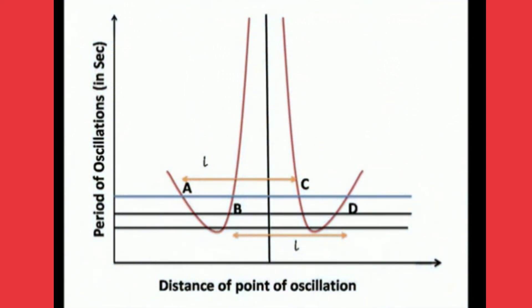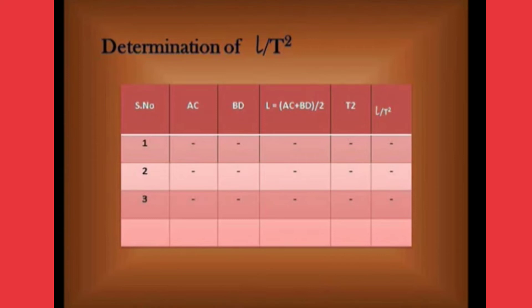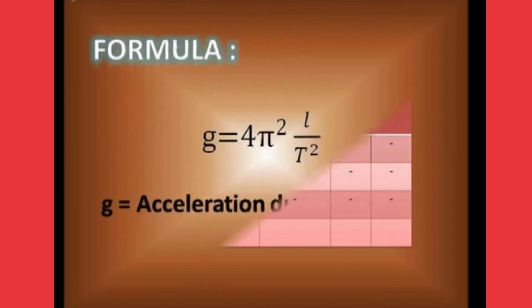From the graph, we have to calculate the equivalent length to the simple pendulum L value. L equals to AC plus BD by 2. Using that tabular form, we have to calculate the L by T square value and do the average.